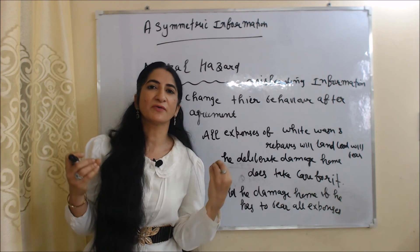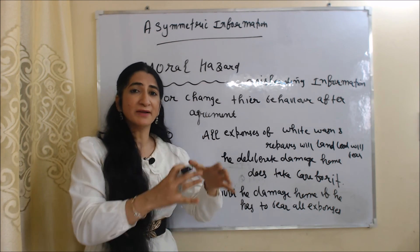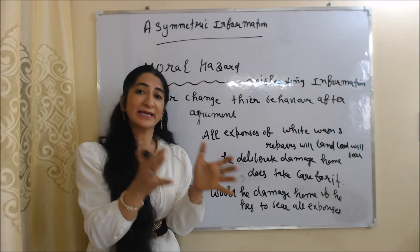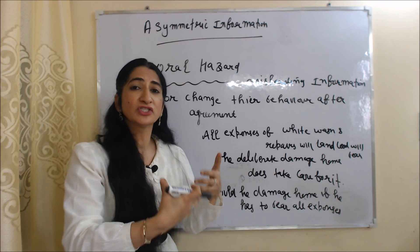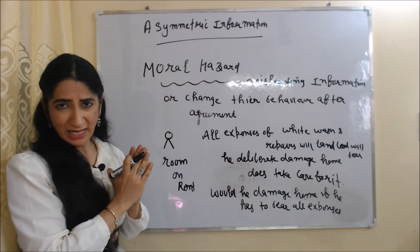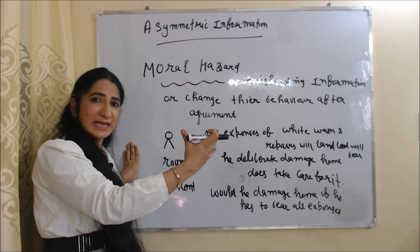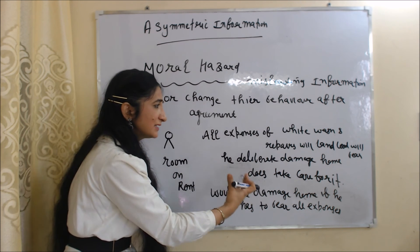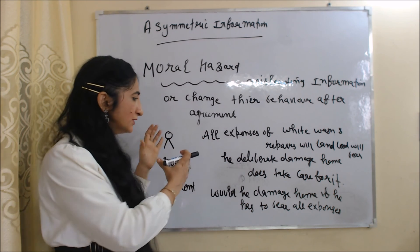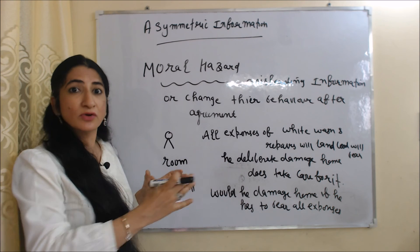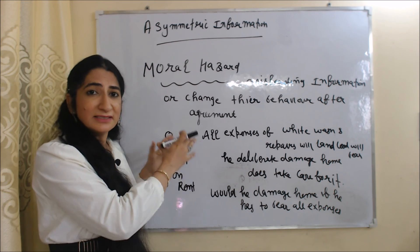The second consequence of asymmetric information is moral hazard. Moral hazard means one party provides misleading information or changes their behavior after an agreement — and this is morally wrong. For example, a person takes a room on rent knowing the landlord will bear all expenses for whitewash and repairs. That's why he deliberately damages the home and doesn't care, because the landlord doesn't have information about this. He would not do this if he had to bear all expenses himself. This is morally wrong, and in this case our market will fail.